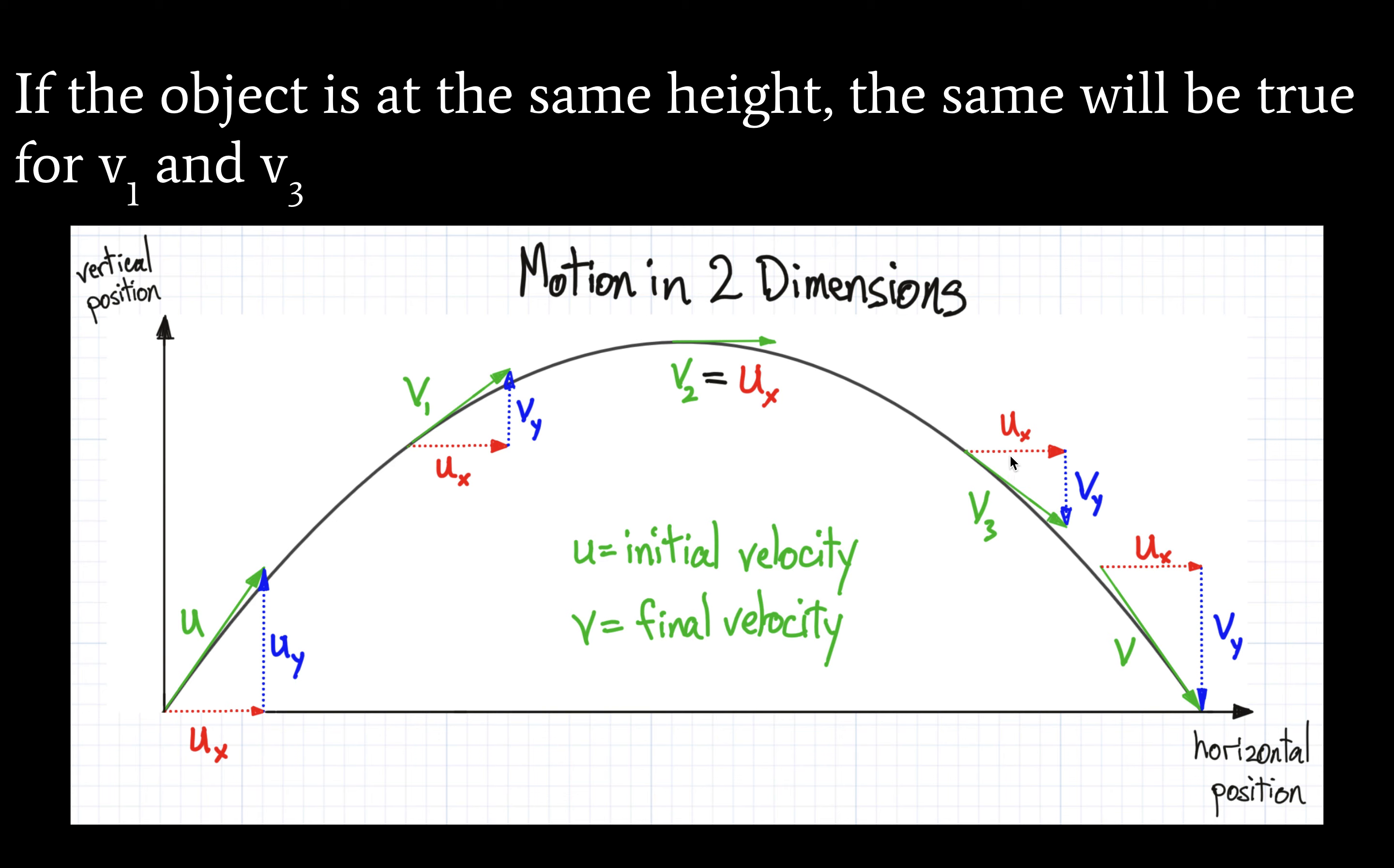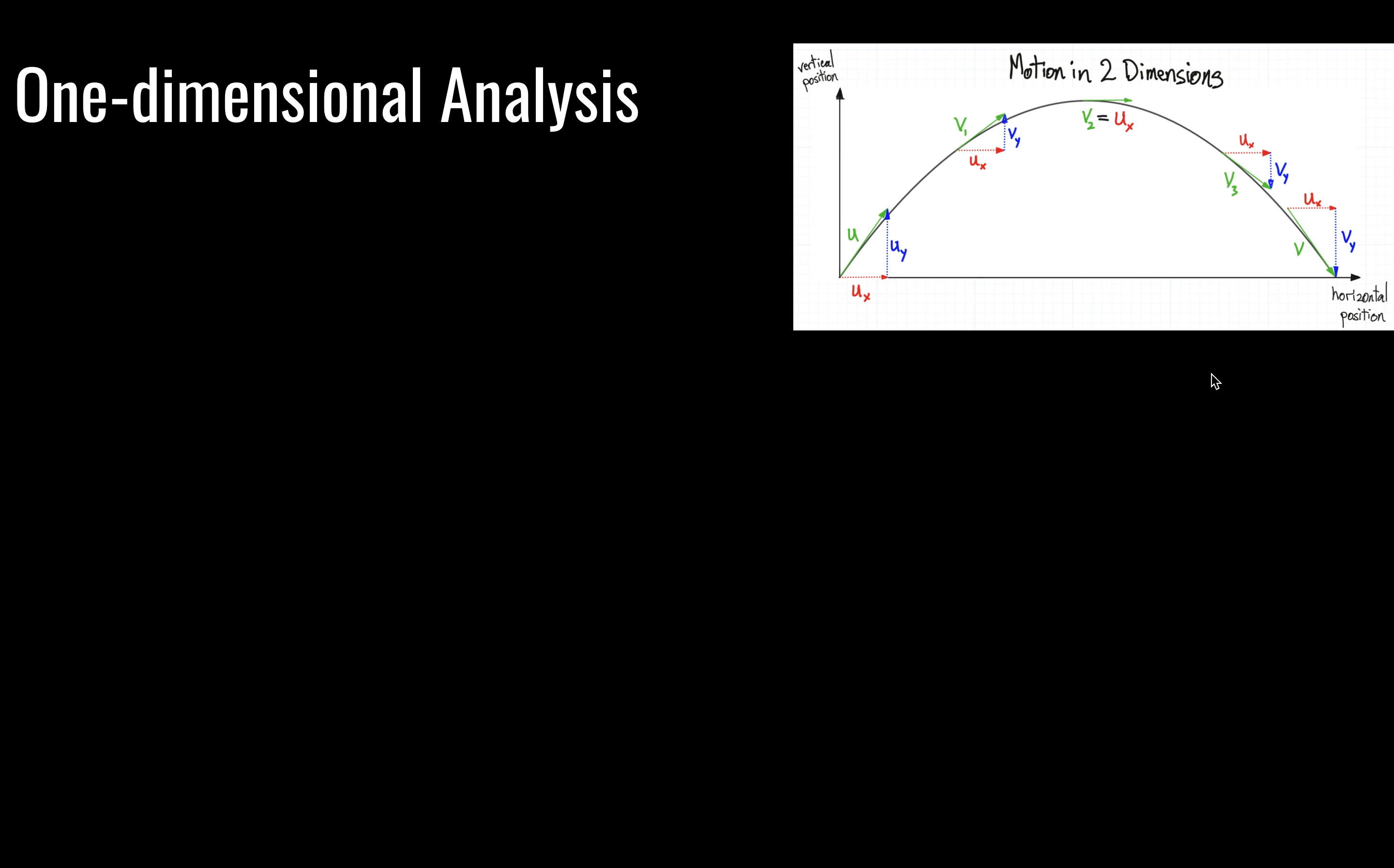Although, if we are measuring off the horizontal, V sub three will have the negative angle of V sub one. And note that V sub Y here will have the same magnitude as this V sub Y, but the direction is in the opposite direction.